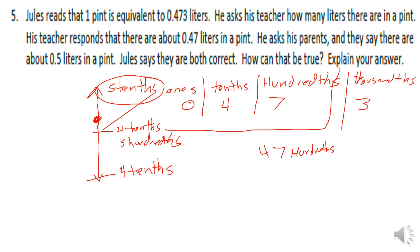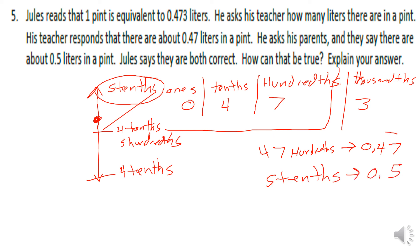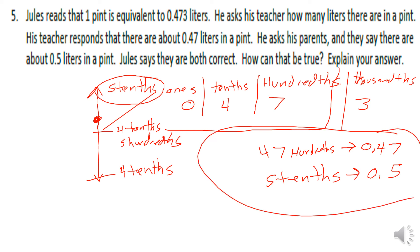So forty-seven hundredths can also be written as the decimal fraction 0.47, and five tenths written as a decimal fraction is 0.5. Here we can see that both the teacher and Jules's parents are correct, just rounding to different place values.